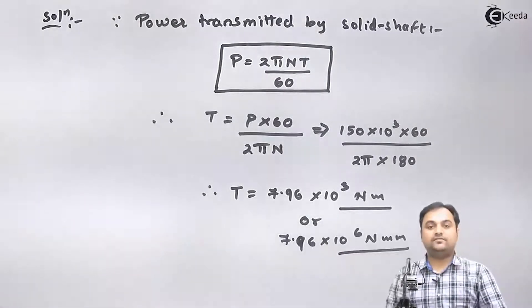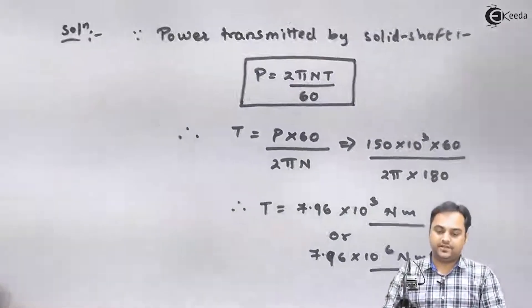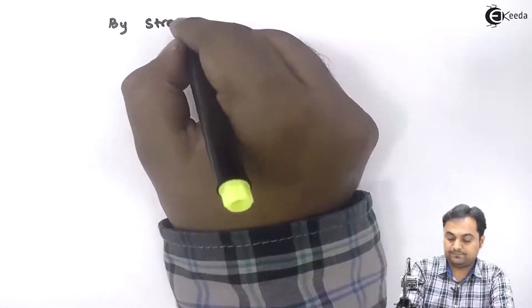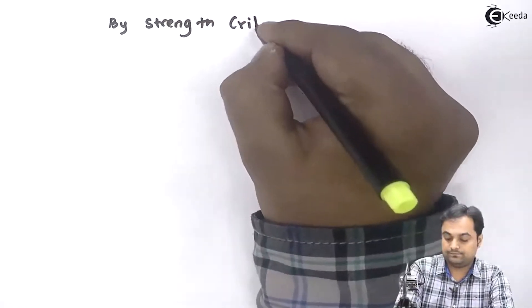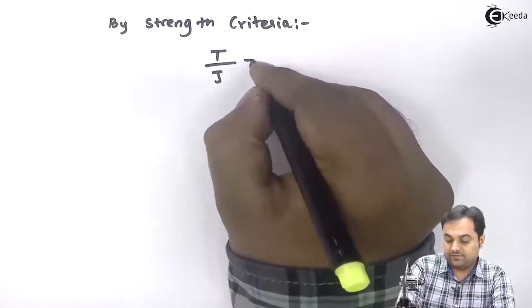So here I have the value of torque. Now to calculate shear stress I will use strength criteria. By strength criteria, T by J is equal to FS by R.